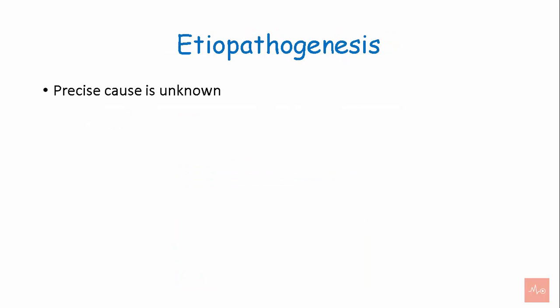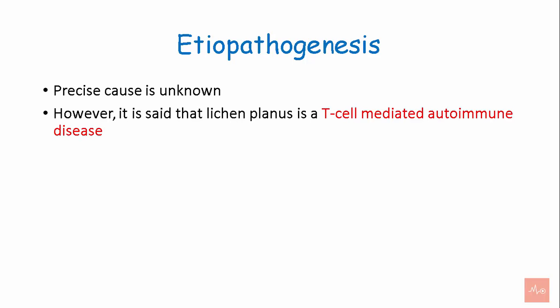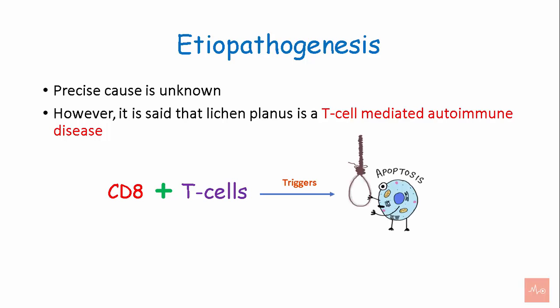Etiopathogenesis: The precise cause is unknown. However, it is said that Lichen Planus is a T-cell mediated autoimmune disease. The CD8+ T-cells trigger apoptosis, i.e., the programmed cell death.